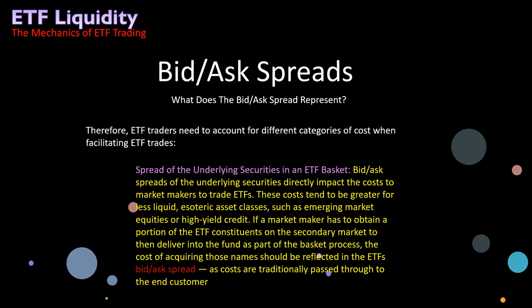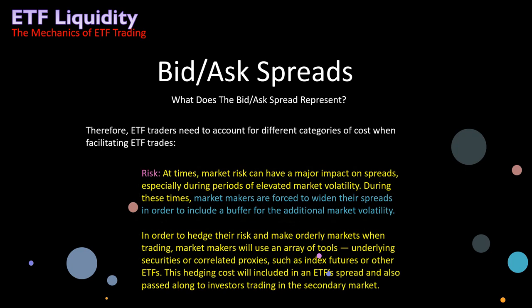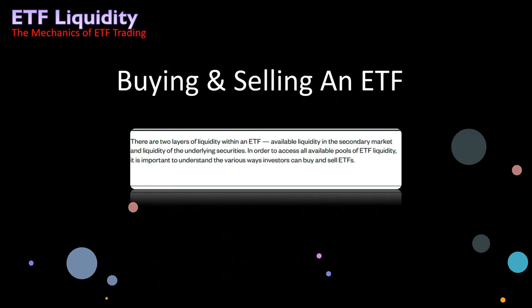Then there is risk. Market risk can have a major impact on spreads, especially during periods of elevated market volatility. During these times, market makers are forced to widen their spreads in order to include a buffer for additional volatility, hedge their risk, and make orderly markets. When trading, market makers will use an array of tools — underlying securities or correlated proxies such as index futures or other ETFs. This hedging cost will be included in an ETF's spread and also passed along to investors trading in the secondary market.